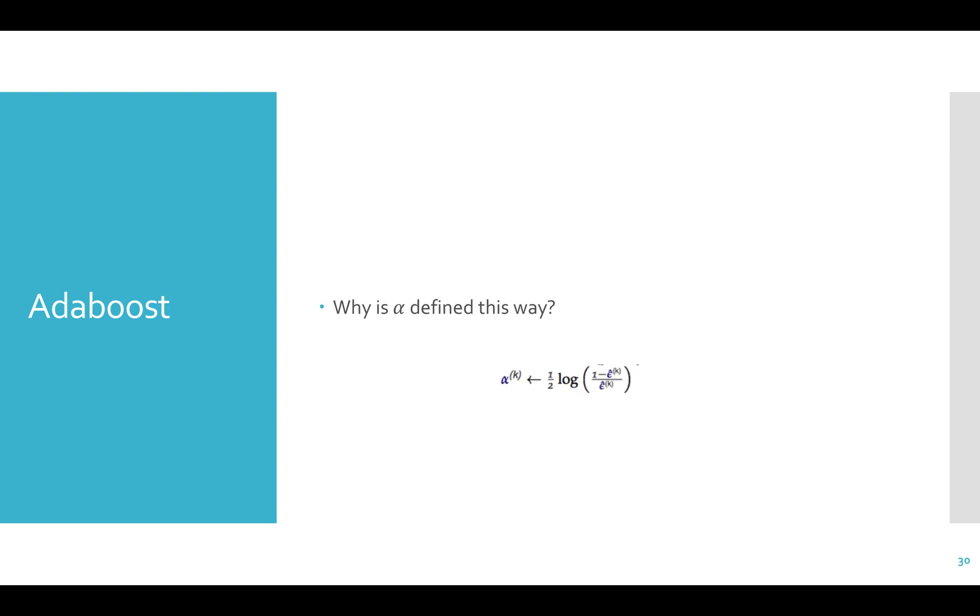Why is alpha defined this way? Let's take an aside to talk about logarithms. Remember these useful log identities. Log of m to the n equals n log m and m to the log base m of n equals n.